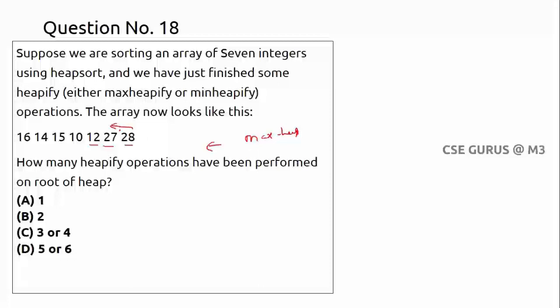Since 28 is the highest among all elements, it is in the last position — one operation done. 27 is the next highest in the second-to-last position — two operations done. For 12, it is not the highest among remaining elements (there is an element greater than 12), so we stop. Only two heap operations have been performed.